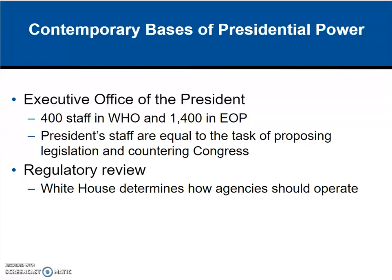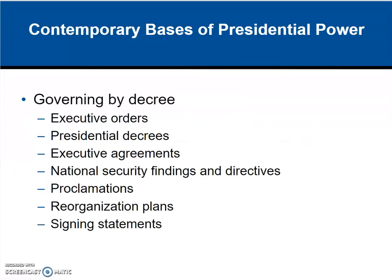We also have the regulatory dimension: through the budget, the White House gets to determine how agencies should operate, gets to appoint their leaders, and can also determine how they should function. This ties into the broader idea of decree powers — executive orders, presidential decrees, and executive agreements.